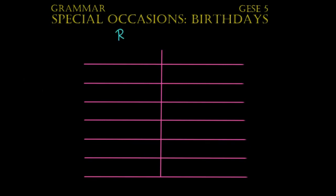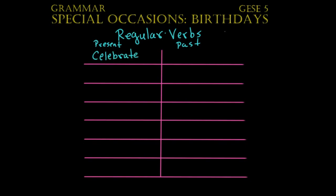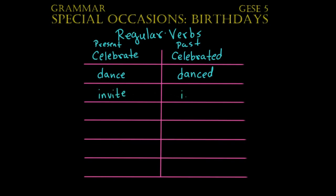We are going to start with regular verbs. On this side is going to be the present, and this is going to be the past. For instance, a verb that you can use for talking about birthdays is celebrate. And in the past we would say celebrated. Another verb that you can use is dance, and in the past we would say danced. Another verb would be invite, and you could say in the past invited.